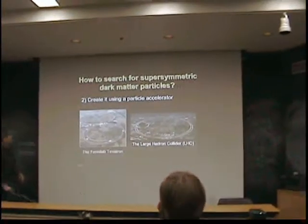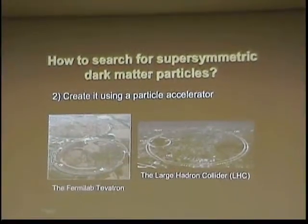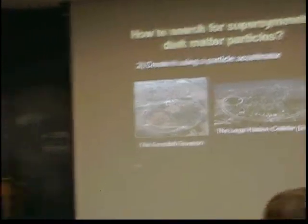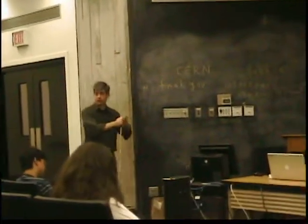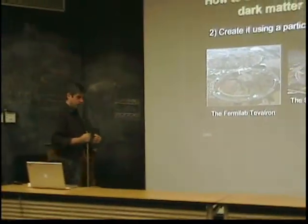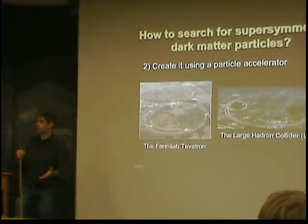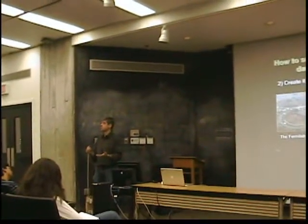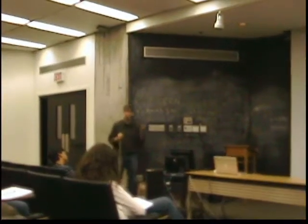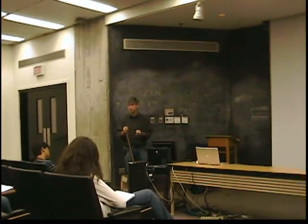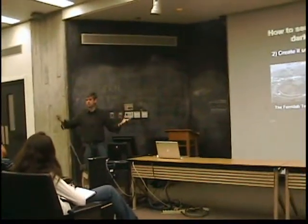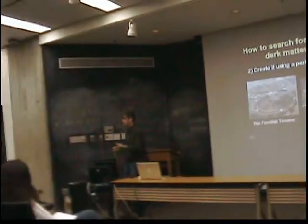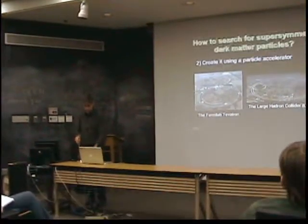Another way you can study supersymmetric dark matter particles is using a particle accelerator, where you actually create new kinds of matter. At the Tevatron here at Fermilab, we have this three-mile ring where we accelerate protons and anti-protons and smash them together. When you smash together particles with enough energy, you exploit Einstein's E=MC² equation — energy and mass can be converted into one another. So if you want to make a new kind of particle with more mass, you take two lighter particles, smash them together, and get heavy particles coming out. The Tevatron and the Large Hadron Collider in Switzerland are the premier facilities to look for these new forms of matter.